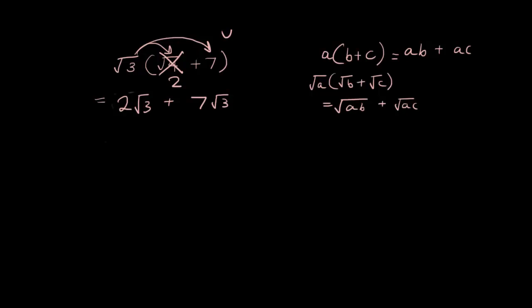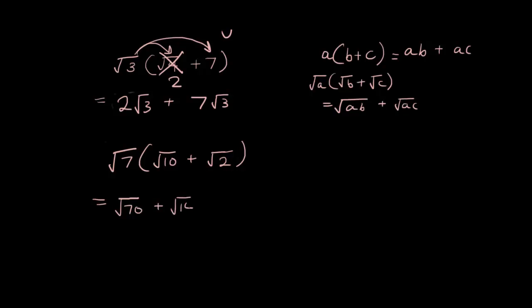Now you guys can do this one: square root of 7 times the bracket (square root of 10 plus square root of 2). Come back when you're done. The answer is the square root of 70 plus the square root of 14 — just check that these numbers can't be simplified any further. That is the final answer. Very simple. Let's do another one.